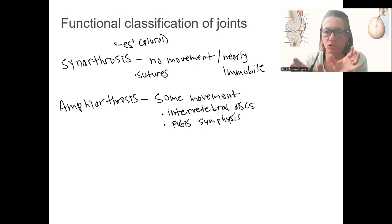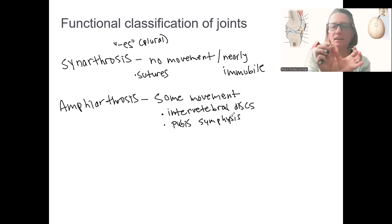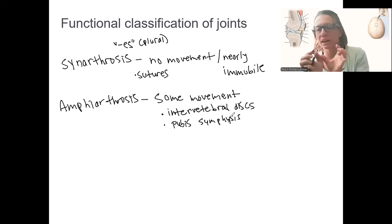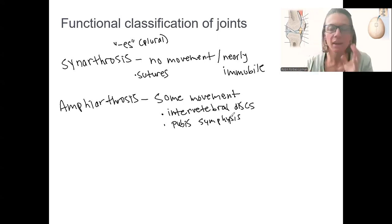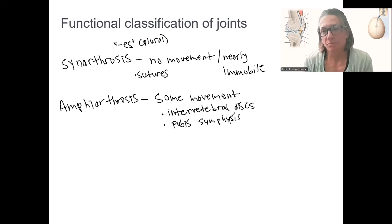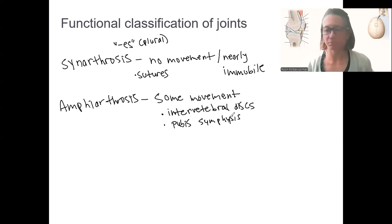Your pelvis — the two bones have some flexibility. Your back — it's part of what allows your back to bend and be flexible. But it's limited, because we want to protect those structures. They're not moving freely like a synovial joint.